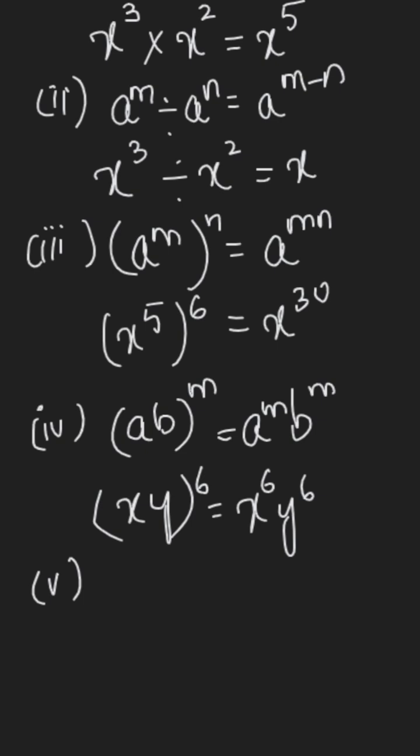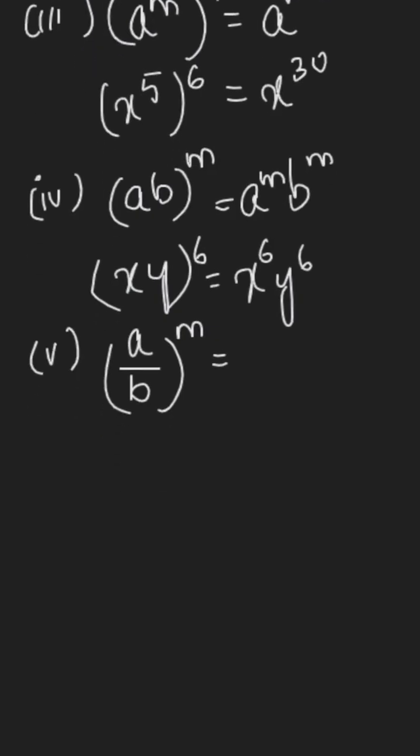Similarly, the power of a fraction rule which is a over b whole power m will be equal to a power m over b power m. So x over y whole power 5 will be equal to x power 5 divided by y power 5.